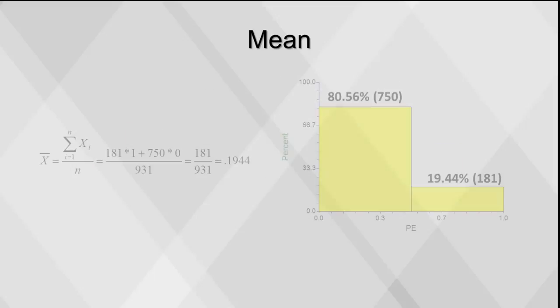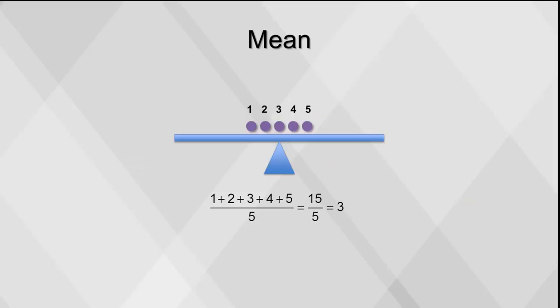We can construct means of binary variables. The mean of a binary variable represents the percentage of ones. The mean is affected by extreme values, which is why we often look at means in conjunction with medians to understand how the data are distributed.